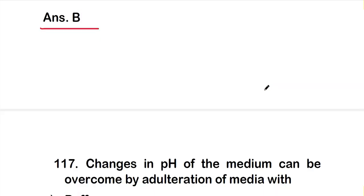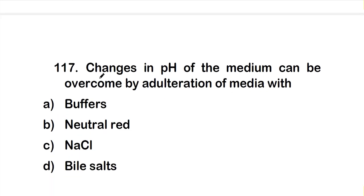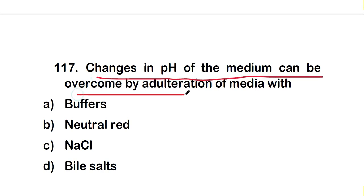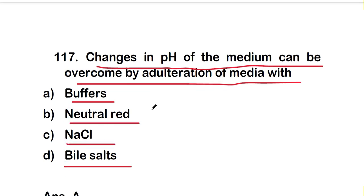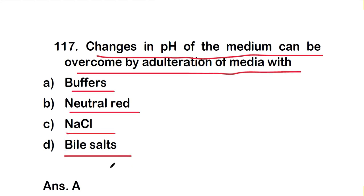Question number 117: Changes in pH of the medium can be overcome by adulteration of media with Option A: buffer, Option B: neutral rate, Option C: initial, Option D: bile salts. The right answer is Option A — buffers. Changes in pH of the media can be overcome by adulteration of media with buffers.